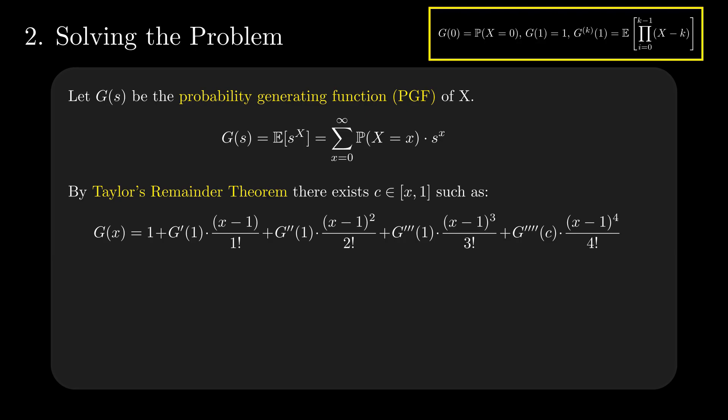Now, we can take x equals 0, replace the known values for G of 1, G derivative of 1, etc., and arrive at the result. G of 0 is a third plus the remainder term.